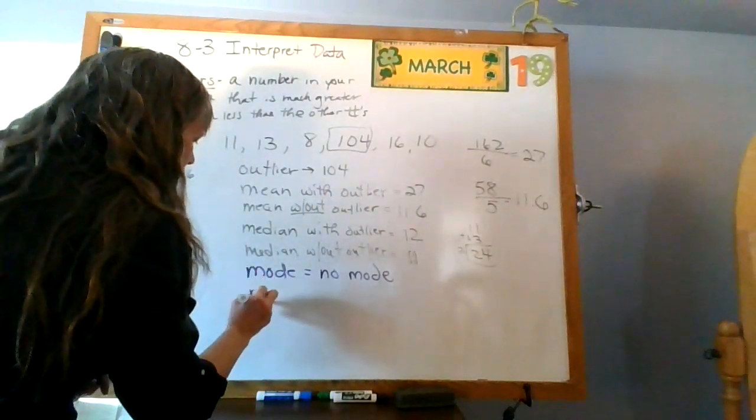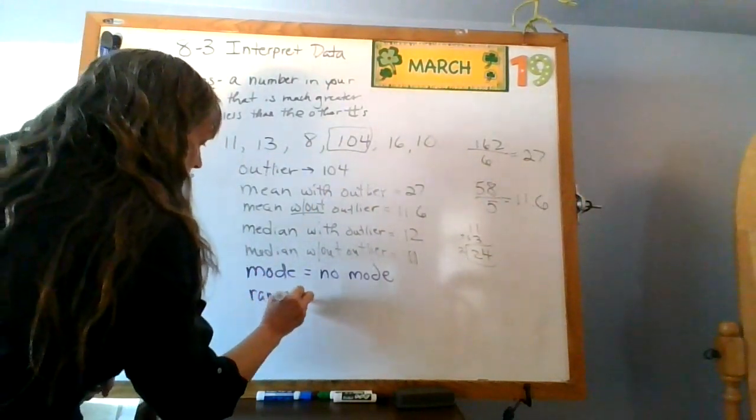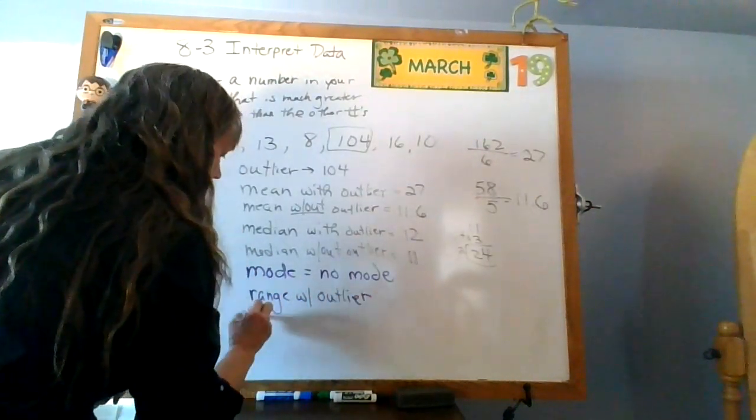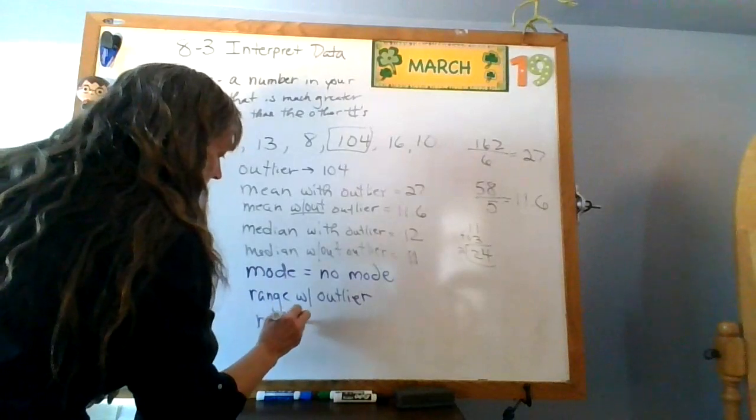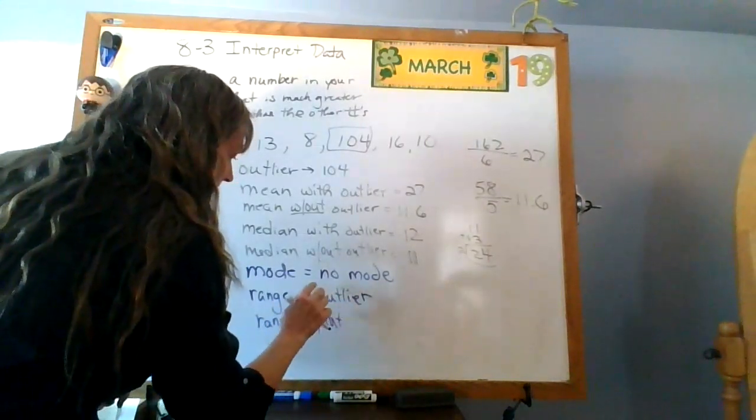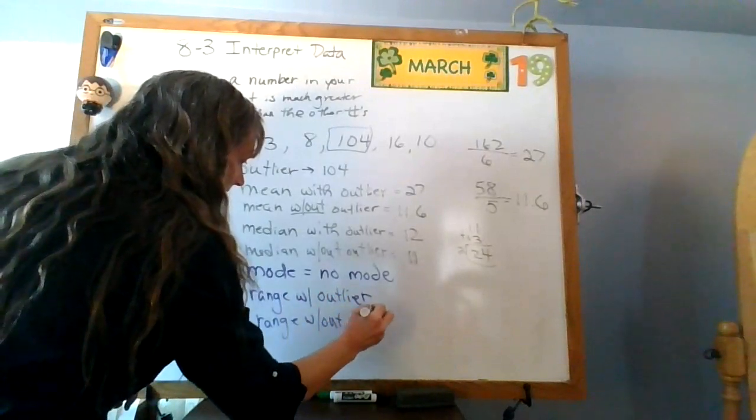Okay. Now let's look at the range. Range with the outlier and the range without the outlier.